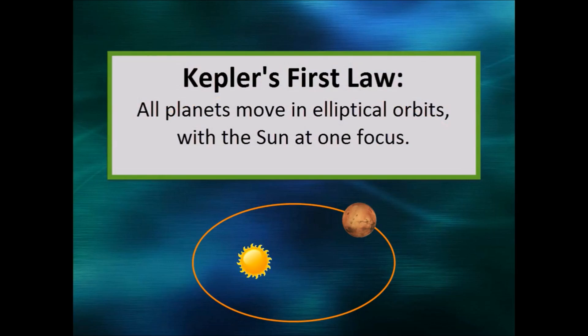This is Kepler's first law of planetary motion. All planets move in elliptical orbits, with the sun at one focus.